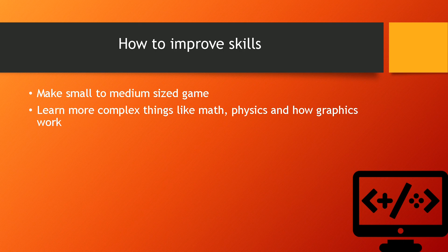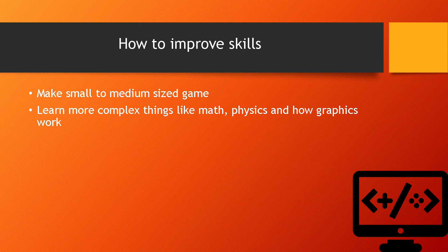Learning how graphics work is very important if you want to really customize your game and how it looks, and add new effects better than the built-in ones. Learning something like SFML to start with is very helpful — I have some tutorials about it. Then move on to OpenGL, which is easier than Vulkan. Learn the basics, learn how shaders work, how graphics work with OpenGL, and it will help you make good effects and make your game look better.